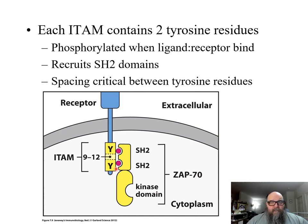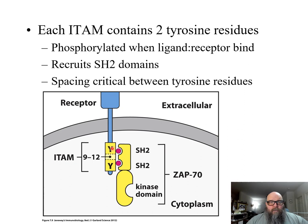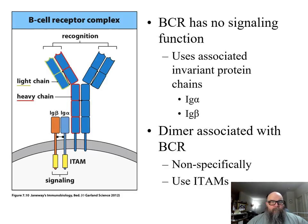Phosphorylated ITAMs at these two tyrosine residues will then recruit in another protein. This protein is going to have some form of the SH2 (Src homology domain 2) — remember SH2? They will bind there, and this will be the first kinase that starts the cytoplasmic dominoes. The example shown here is a protein known as ZAP70. We see the same thing, or a variant of it, with the B cell receptors.